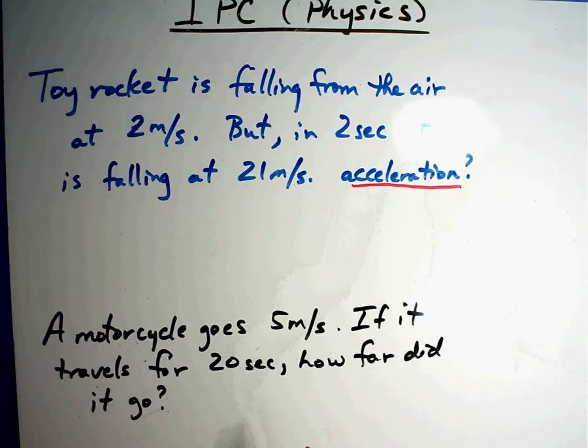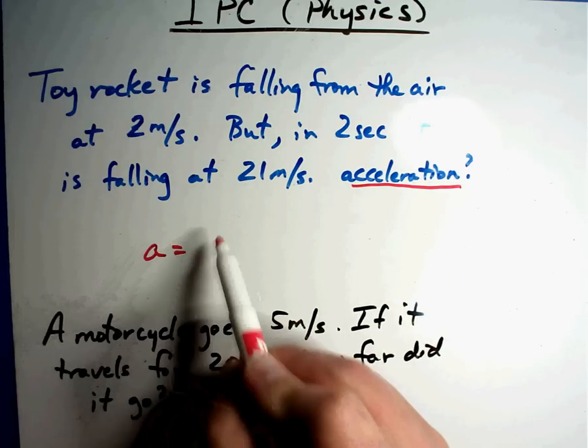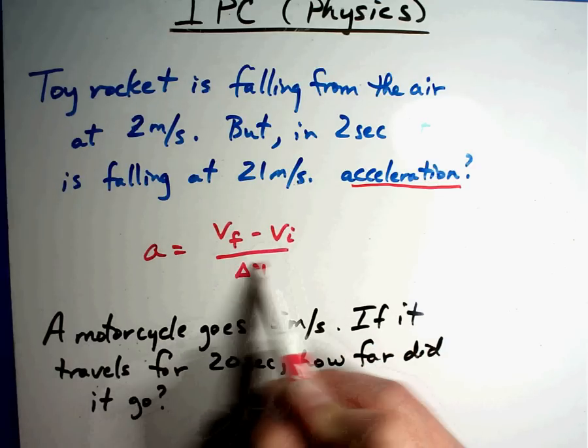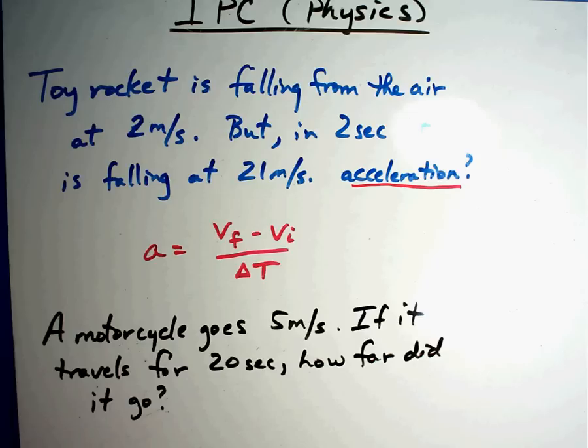When you read the question you want to pick out words that help you. Acceleration tells you to find the acceleration formula and that's Vf minus Vi divided by change in time. Remember, you don't have to know these formulas, they're given to you. You just have to be able to use them. See how we did.